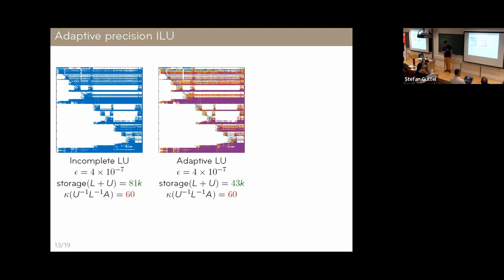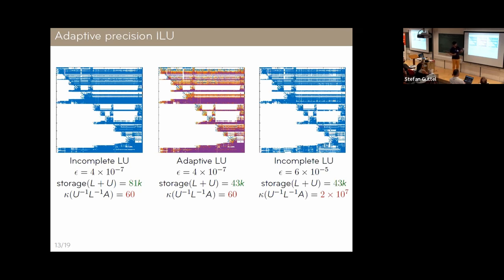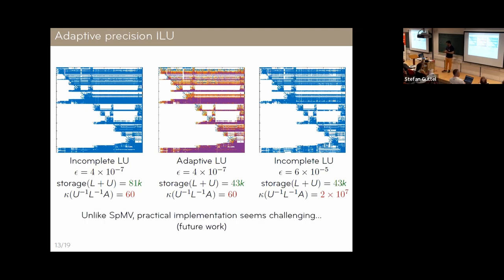Here is an example: the incomplete LU factors for a relatively small epsilon give a very good preconditioner — the preconditioned matrix is well-conditioned. The adaptive version of ILU matches the same accuracy level but with storage divided by almost a factor of two. Alternatively, if we force standard ILU to match the same storage budget by increasing epsilon, we get a much worse preconditioner, losing quality significantly. The hardware implementation of this remains future work — it seems challenging.